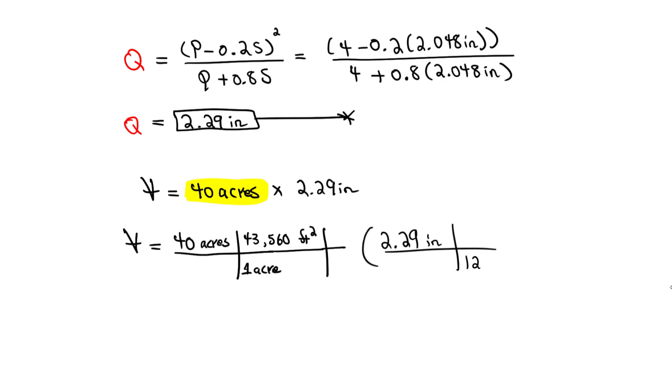So these cancel, these cancel. So we have feet squared times foot. So you solve for the volume and you should get around 331,952.